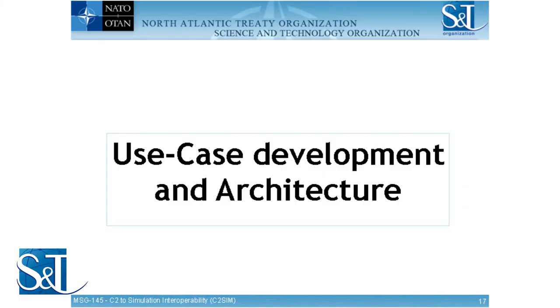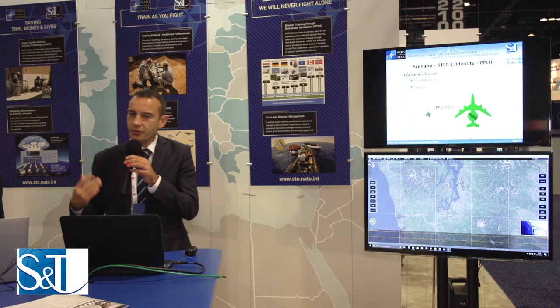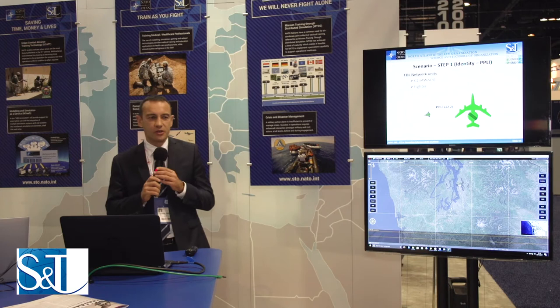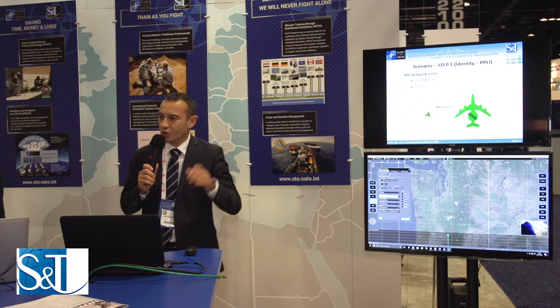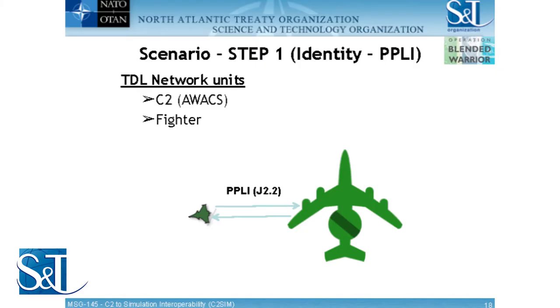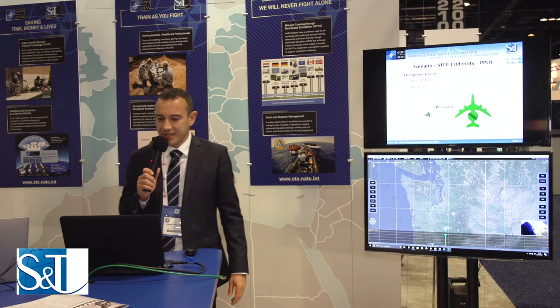Now, an insight regarding the use case, how we developed it, and what the architecture is. First, I would like to introduce the scenario — you should understand the storyboard regarding what we would like to execute using the simulation and the C2. There are only five steps. The first step is the exchange of initial information between two units.